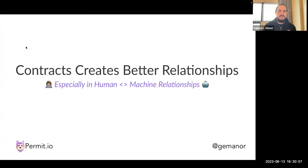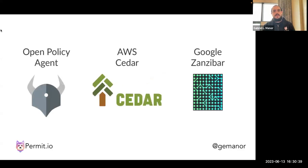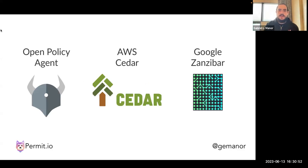The first step to building such an authorization system is creating a contract, because contracts create better relationships. We need two important relationships: between security teams and development teams, and between authorization systems and the application. Today we're going to speak about three types of contracts: Open Policy Agent, a new language released by AWS called AWS Cedar, and an implementation based on Google Zanzibar. Hint: today we are going to choose AWS Cedar.